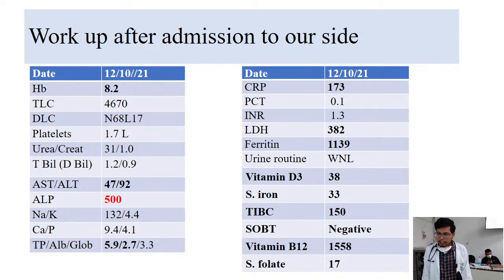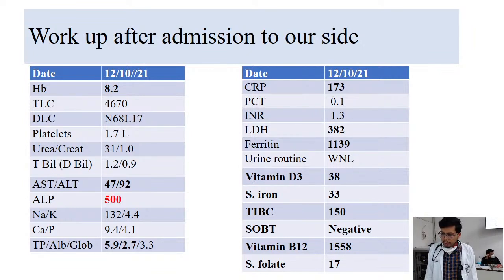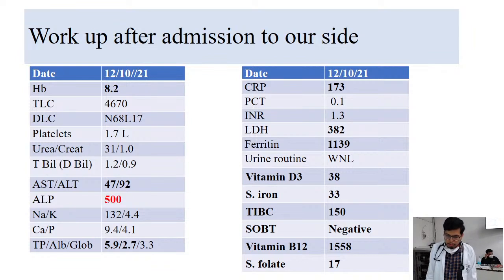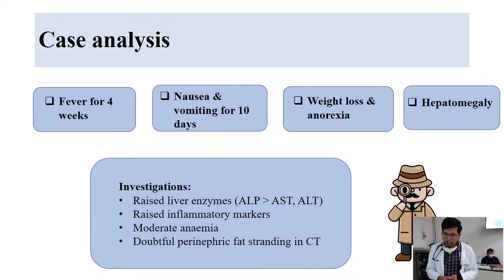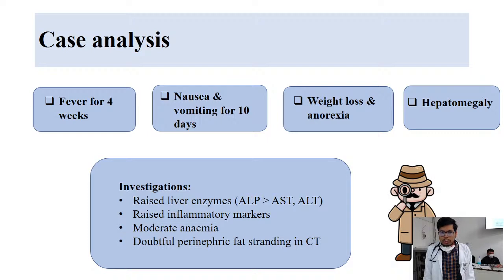After admission, repeated routine investigations revealed persistent moderate anemia with increased inflammatory markers, likely from chronic illness with an iron deficiency component. There were also elevated liver enzymes in a cholestatic pattern. Summarizing the key investigation findings: raised liver enzymes with elevated inflammatory markers, moderate anemia, and doubtful perinephric fat stranding on the outside CT report.